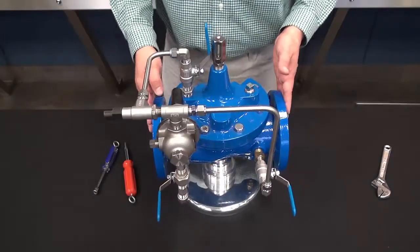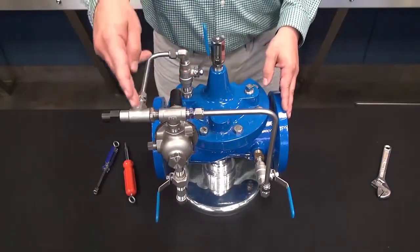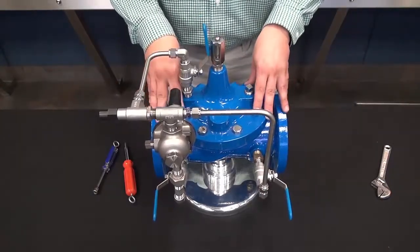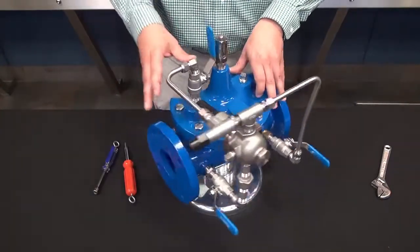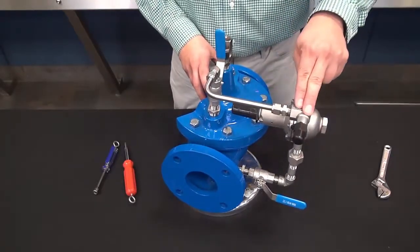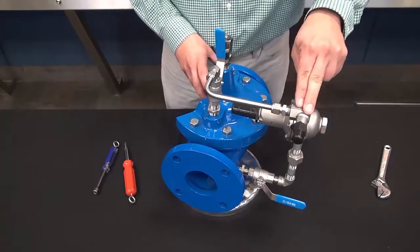So now we have the CRD set, the speed control set. Now you're good to go. Again, make your adjustments slow on the CRD, adjustments on the CV vary to your system.